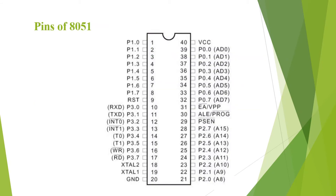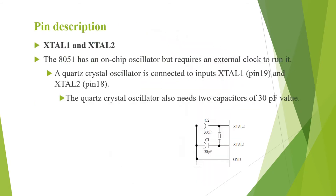This is the pin diagram of 8051. Pin number 18 and 19, that is XTAL2 and XTAL1, are the internal oscillator input and output. The 8051 has an on-chip oscillator but requires external clock to run it, so a quartz crystal oscillator is connected to XTAL1 (pin 19) and XTAL2 (pin 18).